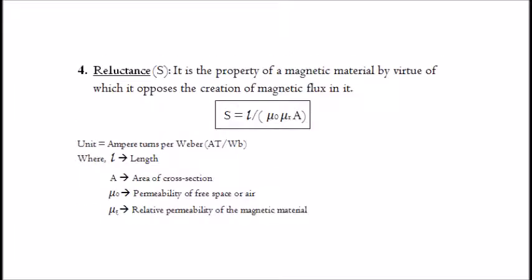4. Reluctance. It is the property of a magnetic material by virtue of which it opposes the creation of magnetic flux in it. It is given by: S equals l divided by (μ₀ · μᵣ · A). The unit of reluctance is ampere-turns per Weber, where l is the length, A is the area of cross-section, μ₀ is the permeability of free space or air, and μᵣ is the relative permeability of the magnetic material.